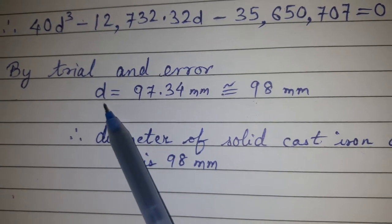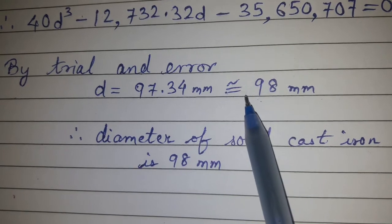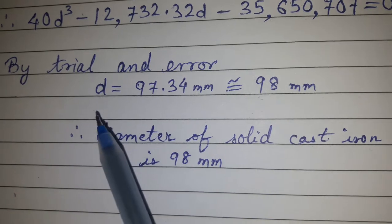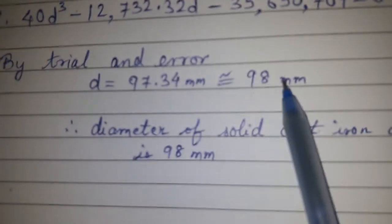Whatever value we obtain for d should be rounded up to be on the safer side. We got 97.34 mm, so we take d = 98 mm.